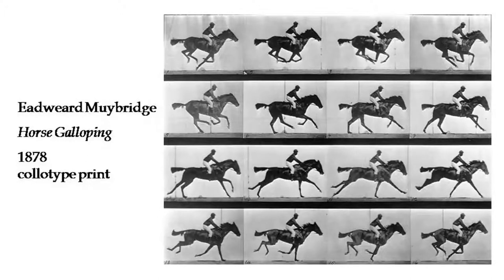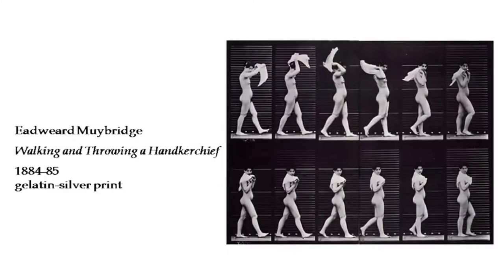These are different kinds of technology called collotype prints. What photography did, as far as painters were concerned, was tell them how the camera could actually capture the details of a movement — for example, details which our naked eye tends to miss. It is difficult to notice each and every detail of a moving object, whereas the camera can do that. So not that photography was posing a strict competition for the painters,